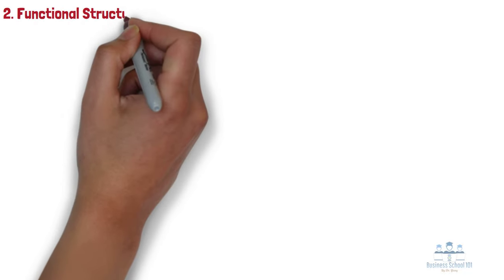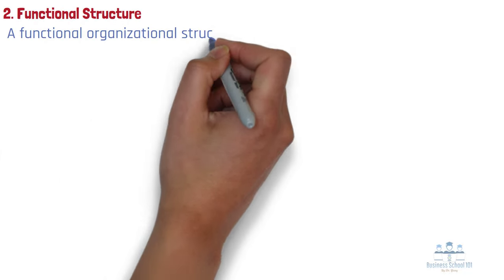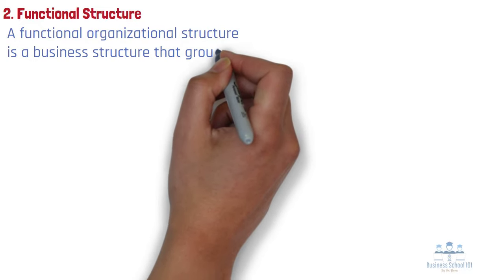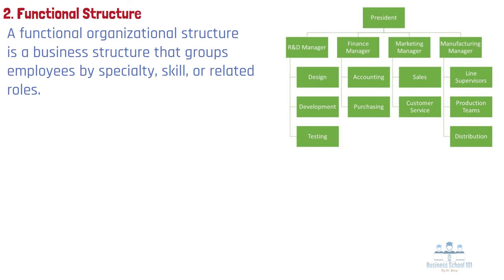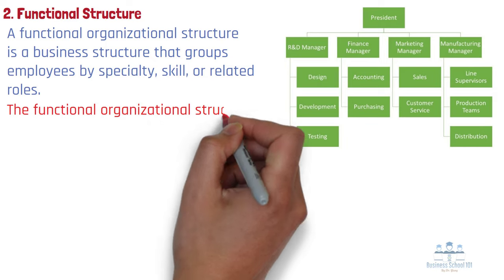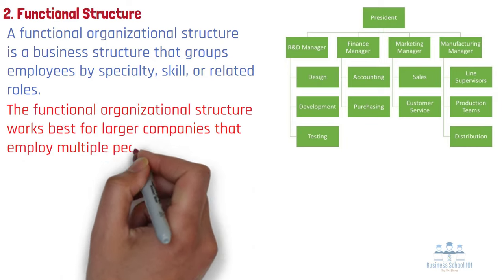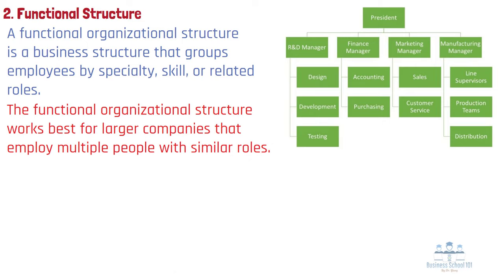Type 2: Functional structure. A functional organizational structure is a business structure that groups employees by specialty, skill, or related roles. It is based on levels of hierarchy that include different departments under the direction of designated leaders. Businesses commonly operate under a functional structure because it groups people who have similar knowledge and, when used in a team environment, helps companies achieve their goals. The functional organizational structure works best for larger companies that employ multiple people with similar roles. In smaller companies, there may not be enough employees with related skills to justify grouping them into separate departments.